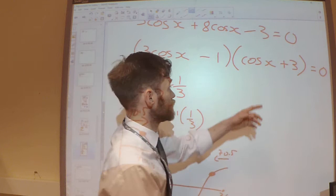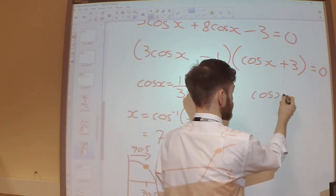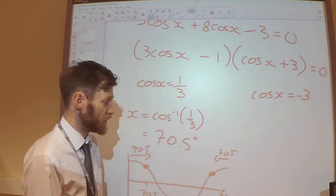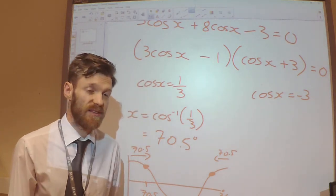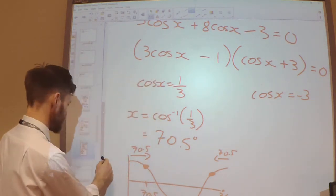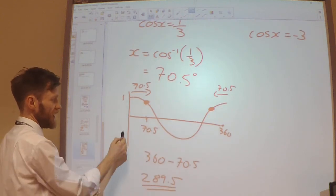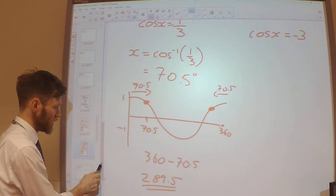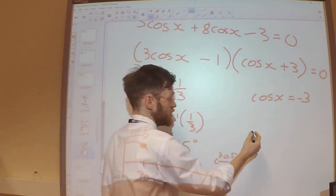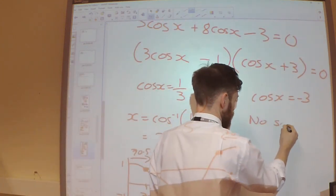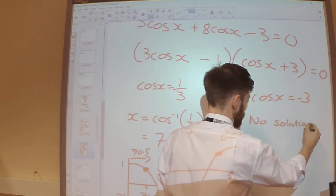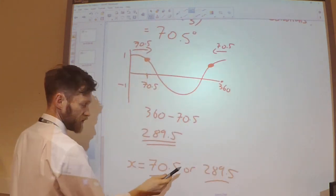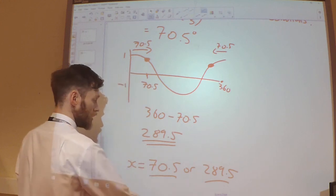The other bracket, cos x would need to be equal minus 3. And for the same reasons as in the previous example, we know cos can never be minus 3. This is the only area between 1 and minus 1. So there are no solutions here. So that means my only two solutions are those.